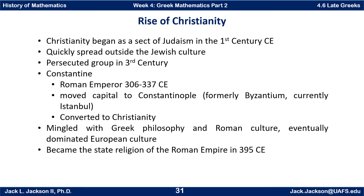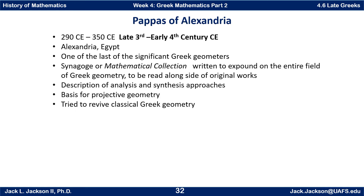Against that backdrop, let's look at a couple of mathematicians from the later Greek period. Pappus is one I want to mention briefly. He was in Alexandria, Egypt, in the late third and early fourth centuries of the Common Era, from about 290 to 350 CE. He was really one of the last of the significant Greek geometers. His mathematical collection was written to expound on the entire field of Greek geometry and was meant to be read alongside the original works — commentaries and expansions rather than replacements.